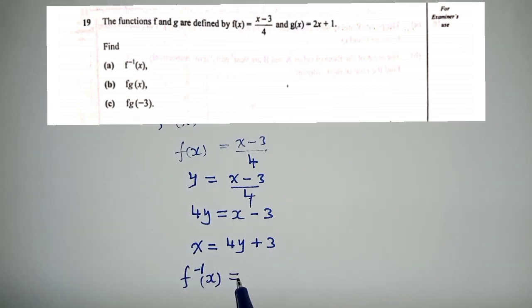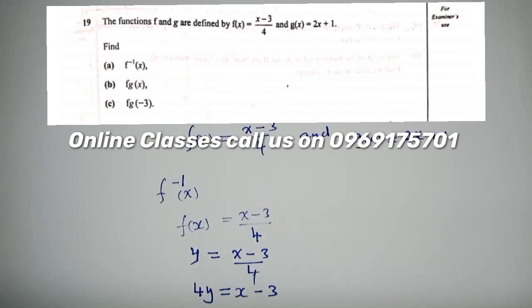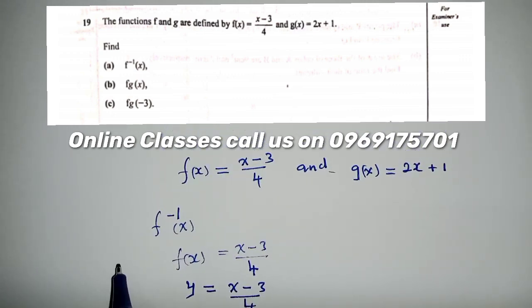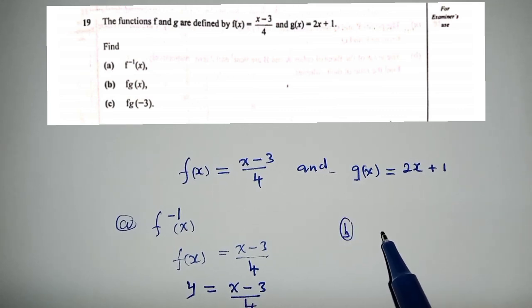What we're looking for is f^(-1)(x). So f^(-1)(x) is equal to 4x + 3, where there is y we exchange and put x. This is our answer, and this was question 1 part (a).